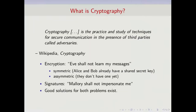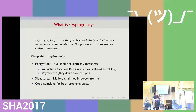This is the Wikipedia definition of cryptography: it is the practice and study of techniques for secure communication in the presence of third parties called adversaries. That's basically saying nothing. The most common thing that people think about when talking about cryptography is encryption. We look into two kinds of encryption: symmetric encryption and asymmetric encryption.